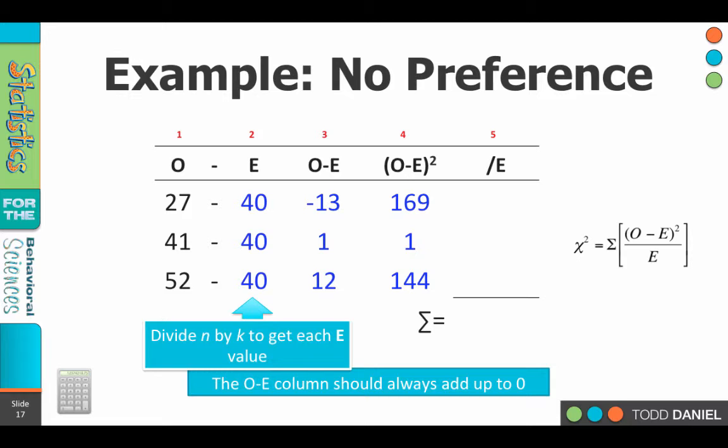That gives us the value that we'll put into our remaining column, O minus E squared divided by E. 169 divided by 40, 4.225. 1 divided by 40, 0.025. And 144 divided by 40, 3.6.